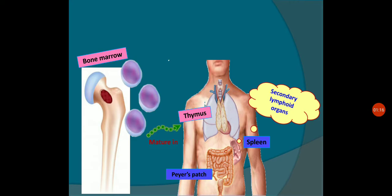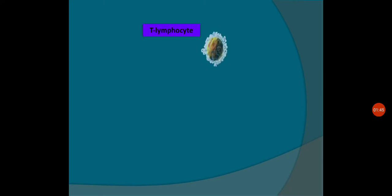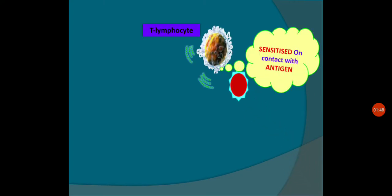After getting maturity, these T-lymphocytes will move to secondary lymphoid organs, that is the spleen and Peyer's patches. These T-lymphocytes travel to the spleen and Peyer's patches, or whatever secondary lymphoid organs, to come in contact with and deal with the pathogen. How they will react or deal with the antigen, we will discuss in detail further.